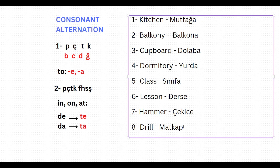And the last word is 'drill,' which is 'matkap' in Turkish. If you want to say 'to the drill,' it should be 'matkap-a.' The last letter is p — is it going to change? It's one of peçeteğe, so it has to change to b. To the drill: matkaba. Alright, so the first rule is like this.